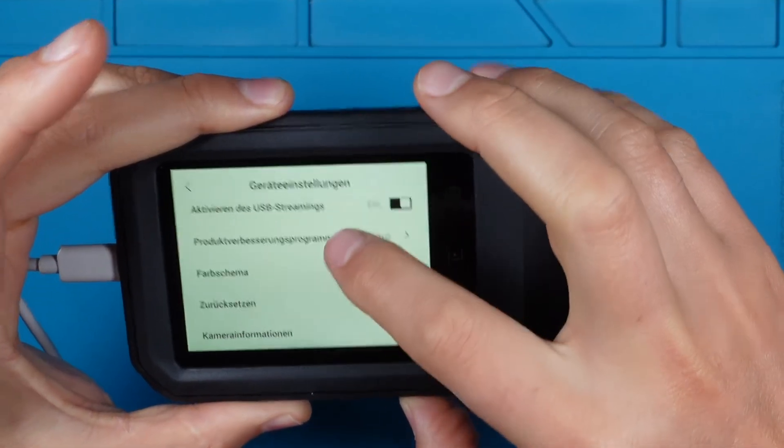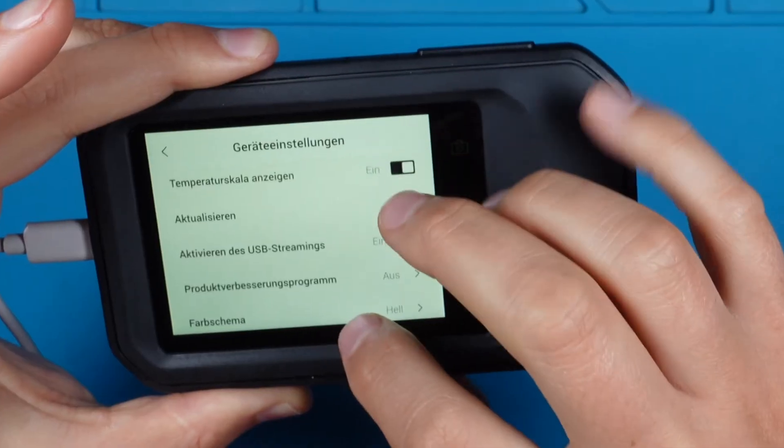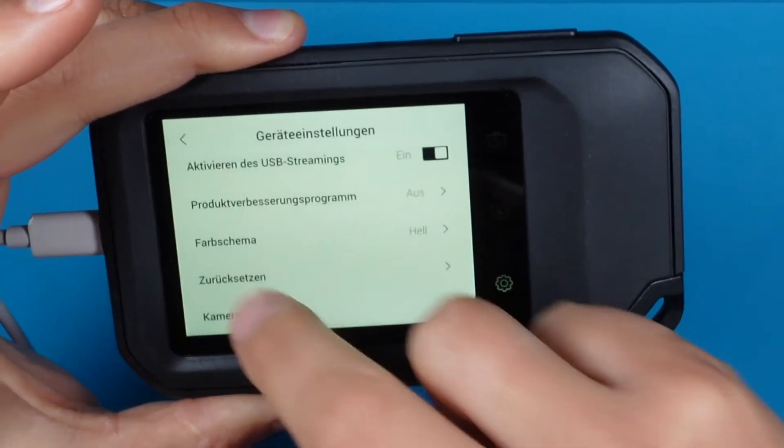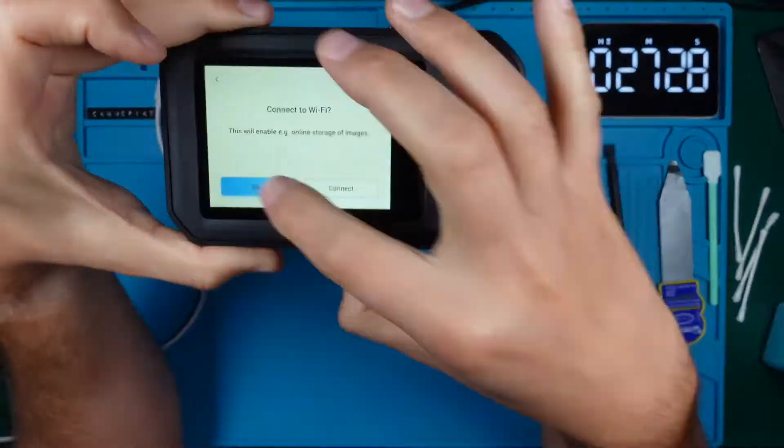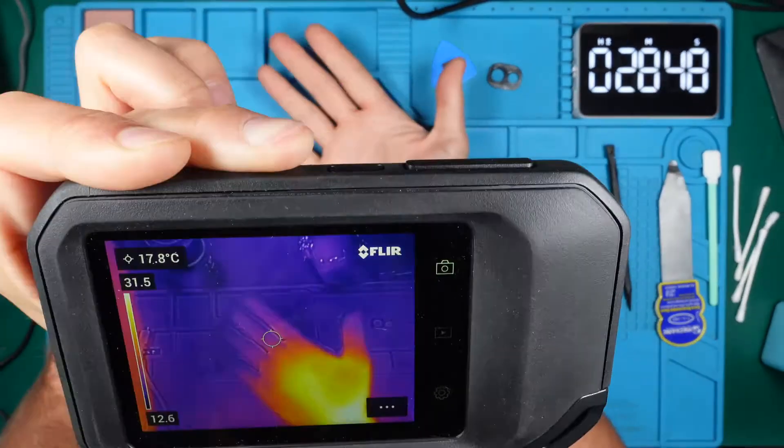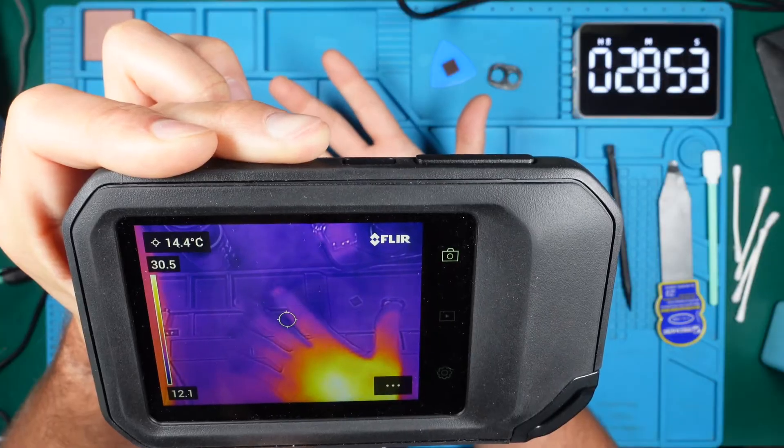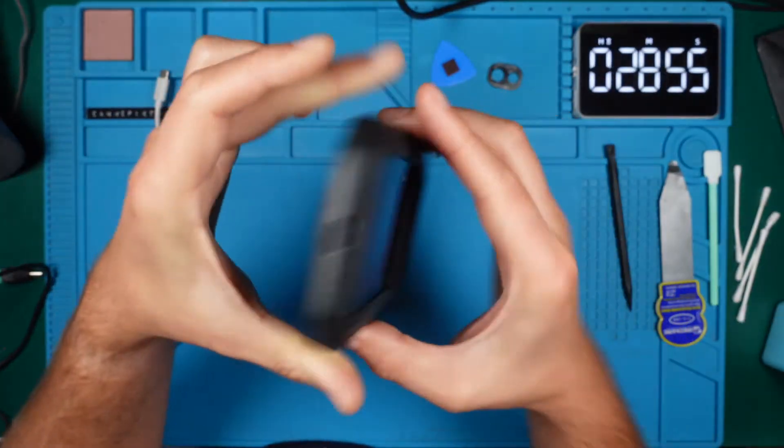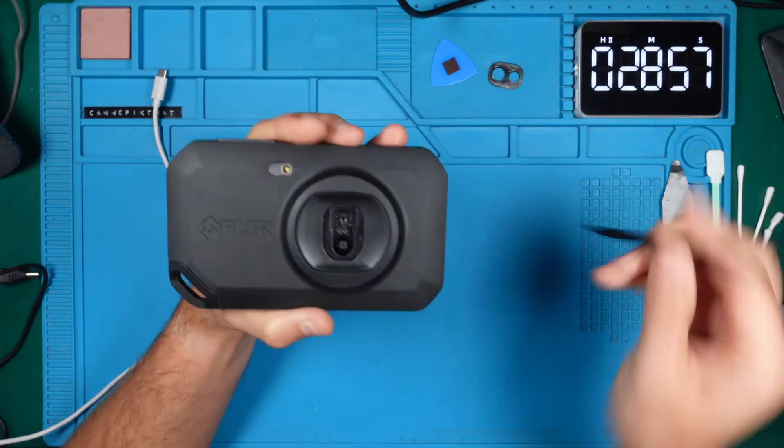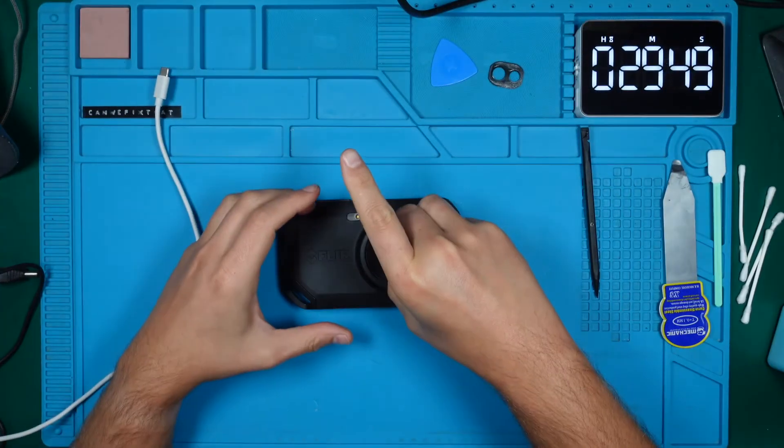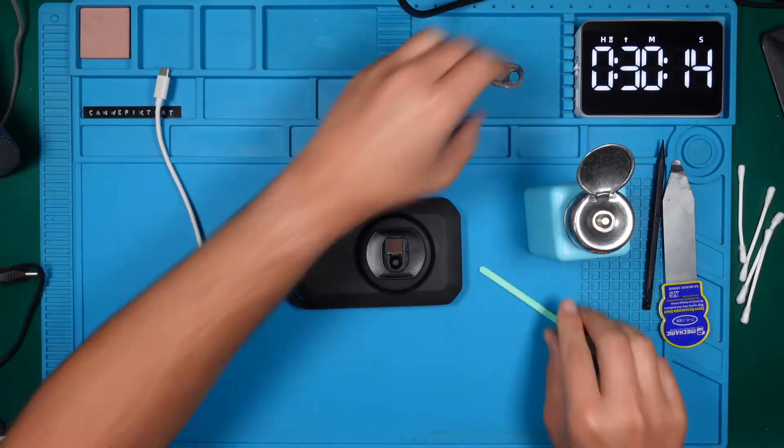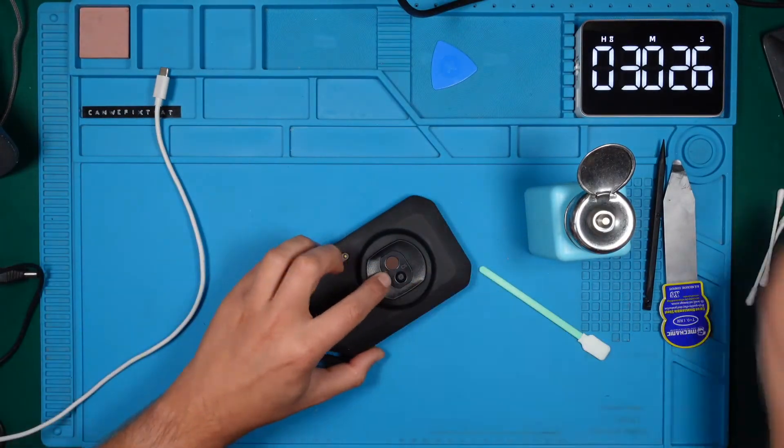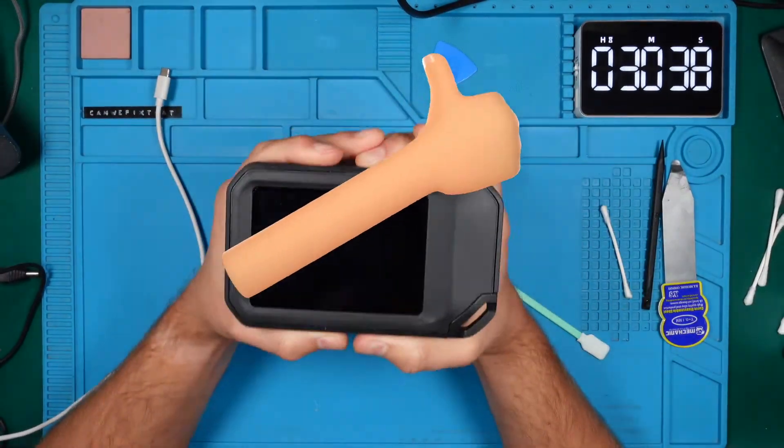Before we proceed with a firmware upgrade, let's initiate a factory reset on the camera. After the reset, it prompts for language and time settings. Once that's done, we are greeted with our thermal image again. But the real question is, will it hold up through the next power off and on cycle? Time to put the metal cover back on, hopefully for the final time. And hey, if you are enjoying what I am doing here, a thumbs up would be much appreciated.